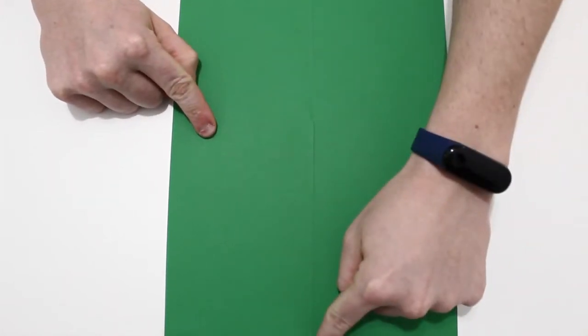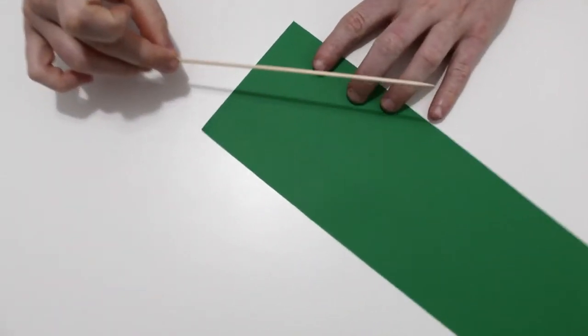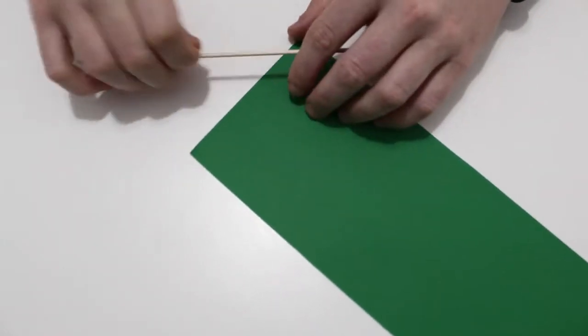Vamos a aprender a hacer tres tipos de flores que las tres tienen el mismo tallo. Así que vamos a empezar por eso. Vamos a coger un folio y lo vamos a partir por la mitad a lo largo. Ahora con un palito de brocheta poniéndolo en diagonal, vamos a empezar a enrollar el folio de esta forma.